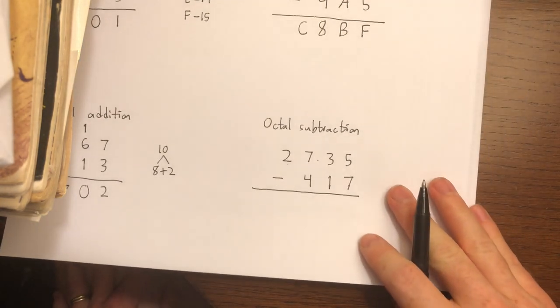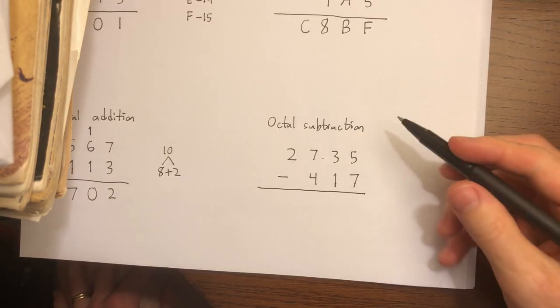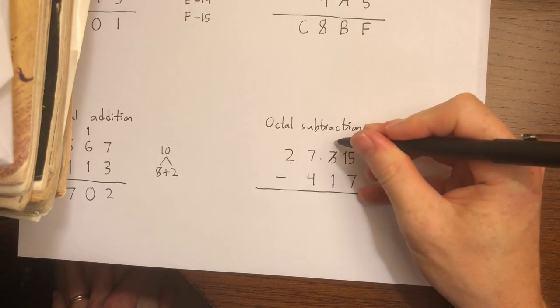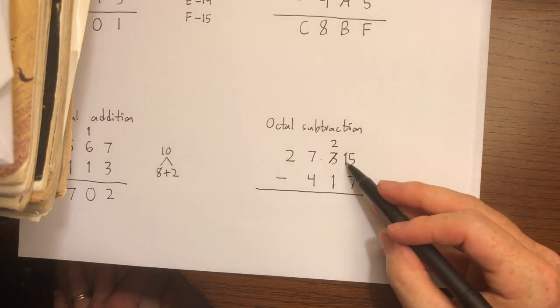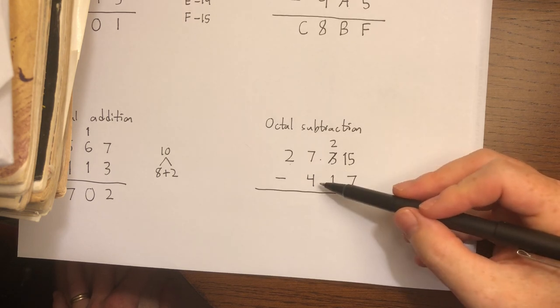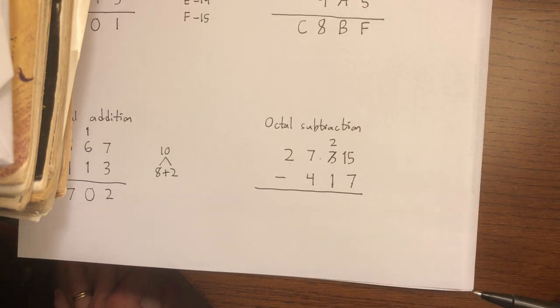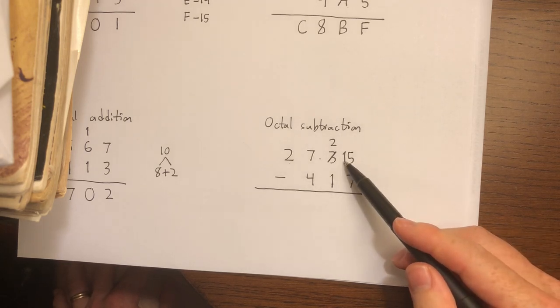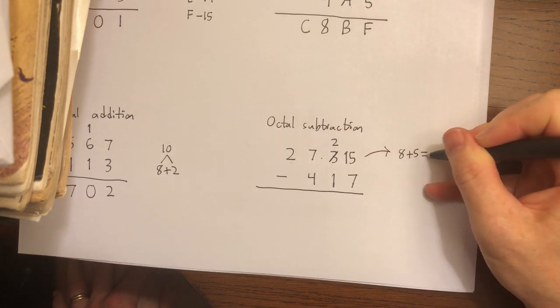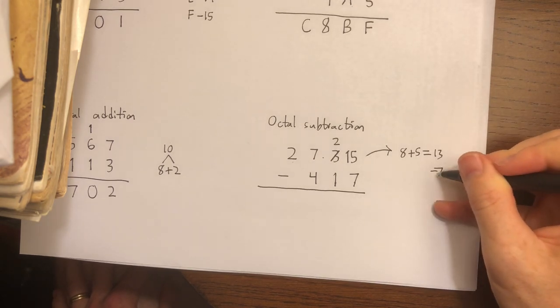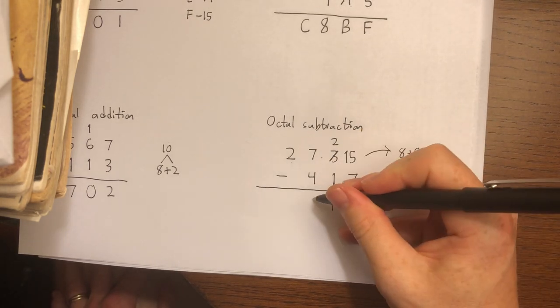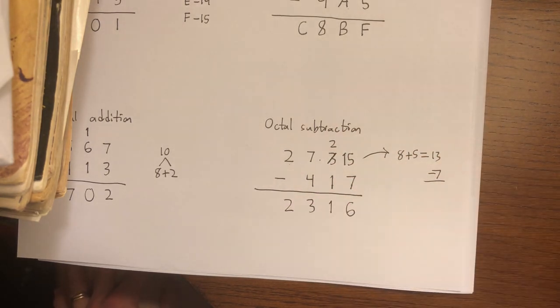And for the very last example, octal subtraction. 5 is smaller than 7, so let's carry in a value of 8 from the next column over. So I write that with a leading 1. Remember, this is not 15. That leading 1 carries a weight of 8. 2 minus 1, we're going to be okay there. 7 minus 4, we're going to be okay there. So I don't need to worry about any more carries. So this is 8 plus 5. So octal 1, 5 would be the same as decimal 13, and then I'm subtracting 7 from that. So that leaves me with a 6 here. 2 minus 1 gives me 1. 7 minus 4 gives me 3. And lastly, 2 minus nothing gives me 2.